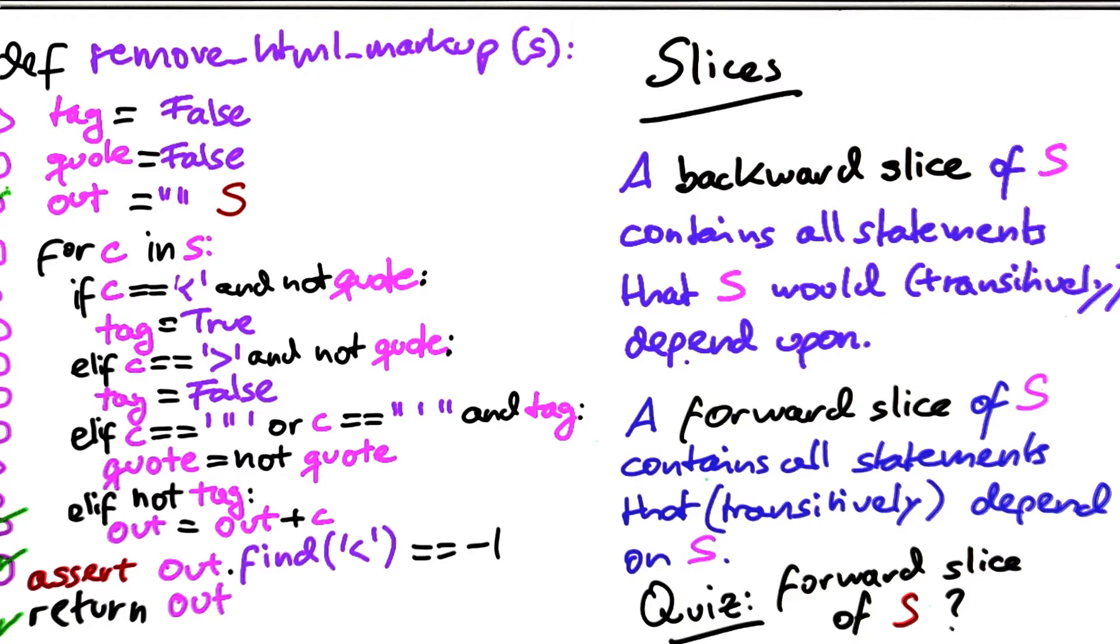We can now check whether anything else depends on the execution of these statements. The only one that's in the loop is here, out equals out plus c, but none of the other statements up here read something from out.